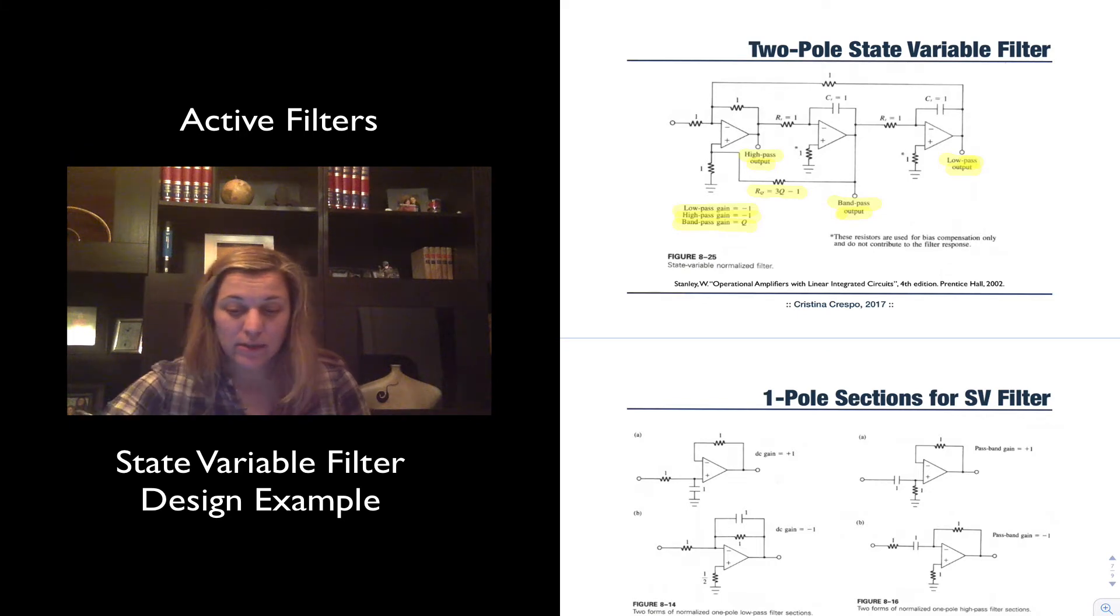Notice also that there are certain resistors, and I'll label them in a different color. Here it says these resistors are used for bias compensation only and do not contribute to the filter response, and those are the ones marked with an asterisk. As you can imagine, there are two lonely resistors, those are bias compensation resistors.